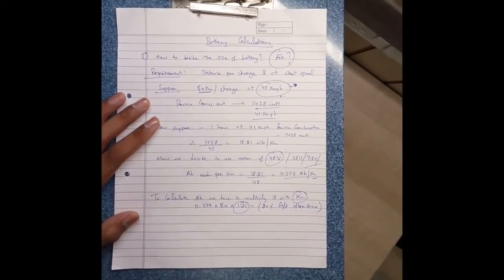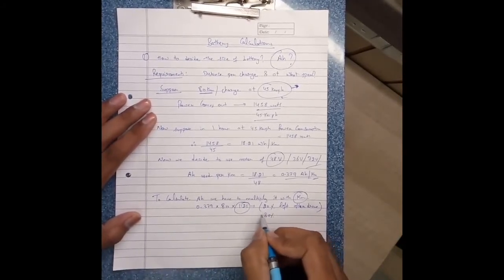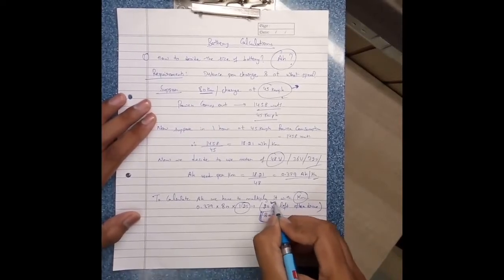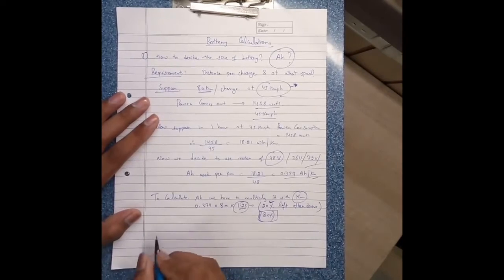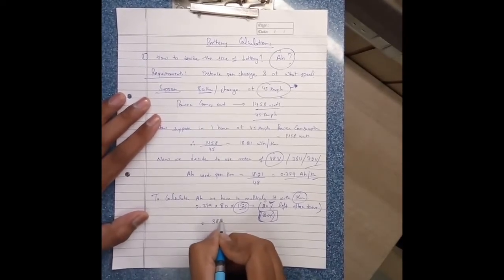In these batteries, 80% value is used and 20% is left. So we take 1.25 that equals to 38 ampere.